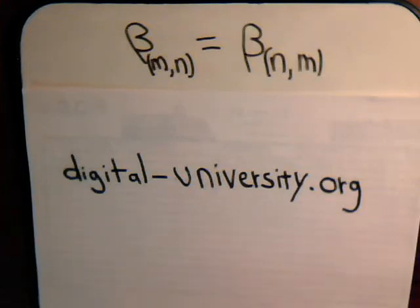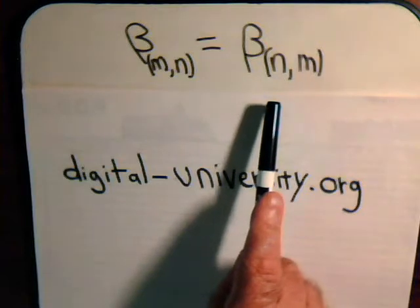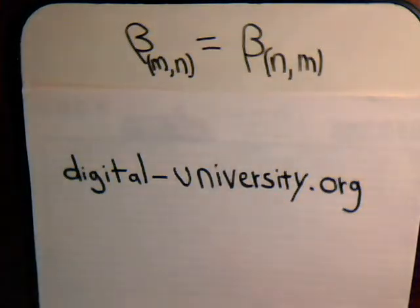In our introductory video concerning the beta function, we stated that beta(m,n) equals beta(n,m) but we didn't prove it, so we want to take a few minutes in this video and demonstrate that.